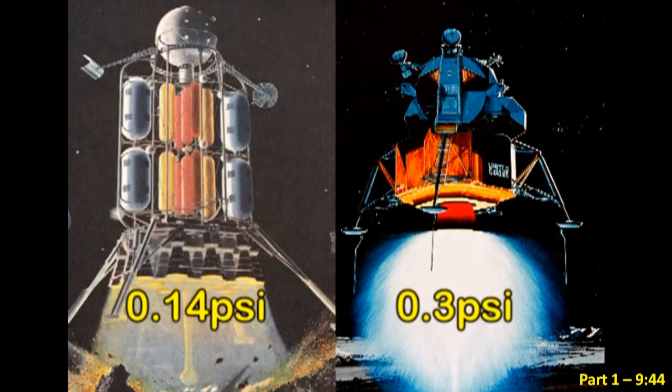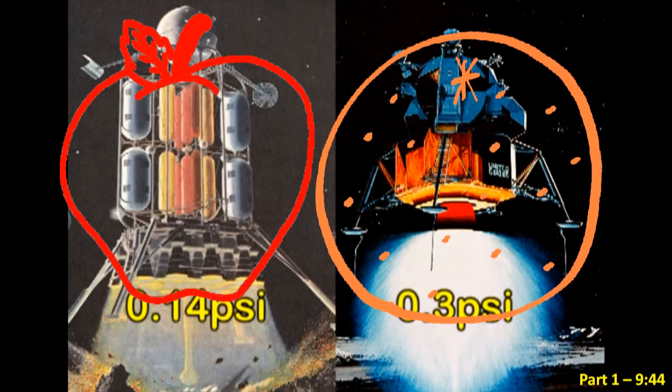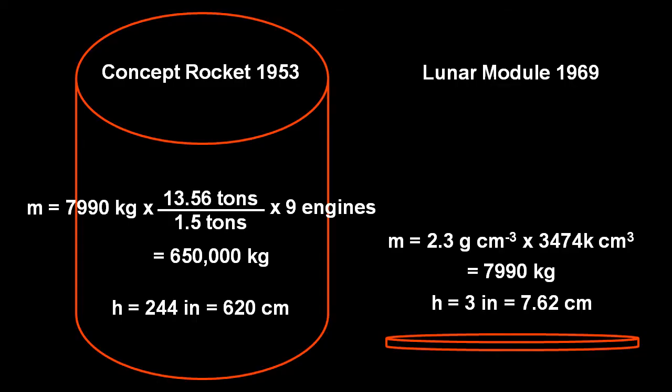So, at the end of the day, we find that Jarrah was comparing apples to oranges when he said that the 1953 concept rocket had 10% of the pressure that I calculated for the lunar module descent engine.